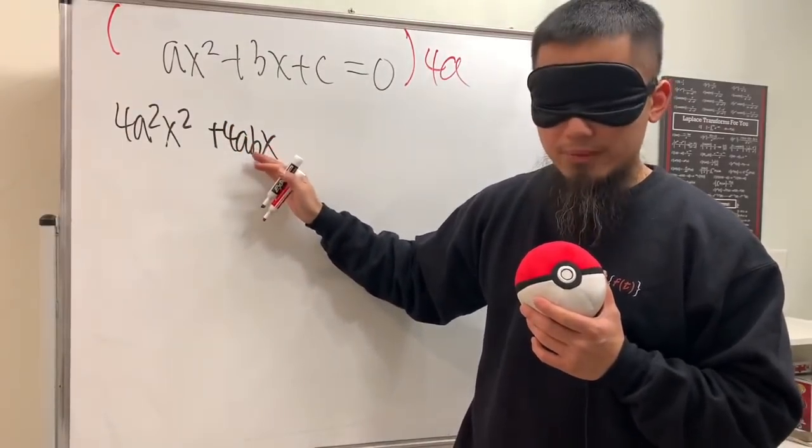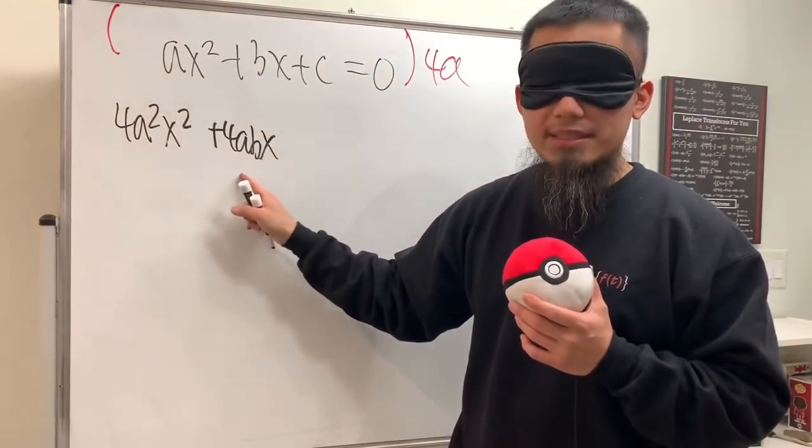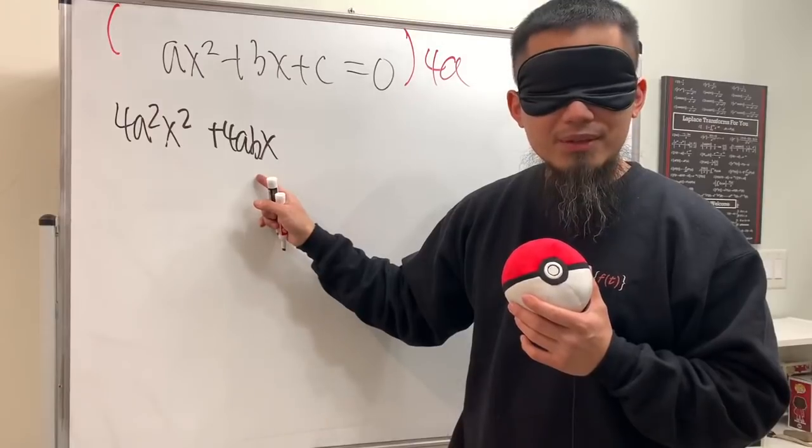4abx. Well if you break this down, this is the same as 2 times 2ax and then times b, right?